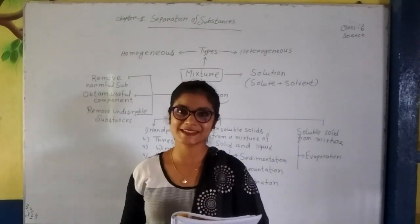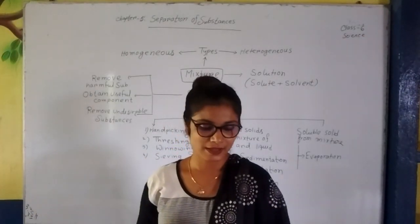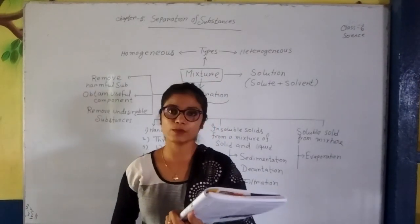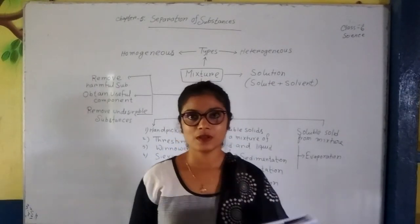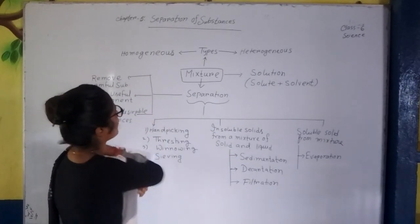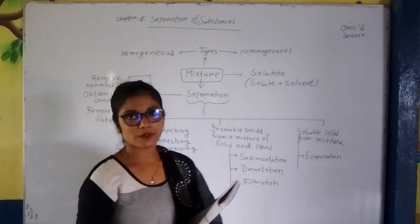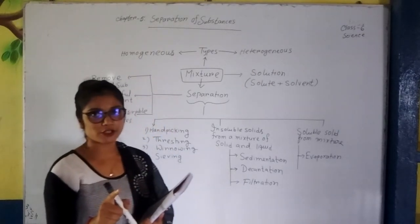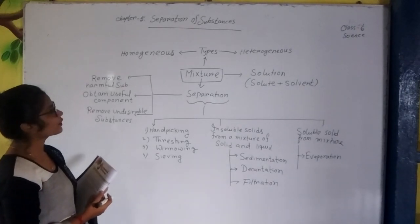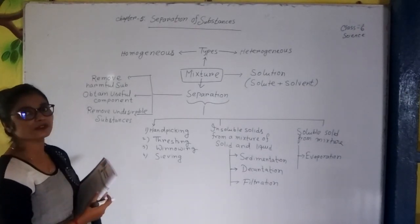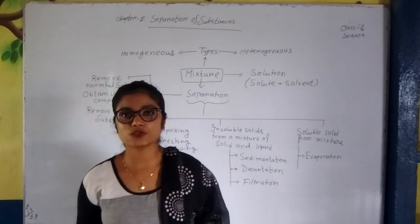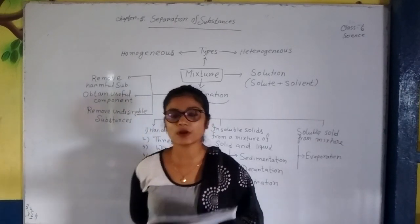Welcome to the Classics Studio Science Chapter 5, Separation of Substance. Open the book, page number 54. You can see it on the board. I have made a gist of your chapter. Watch the video and make a screenshot so you can easily make the chart of your chapter. So let's start our class. Today's topic is the Separation of Substance.